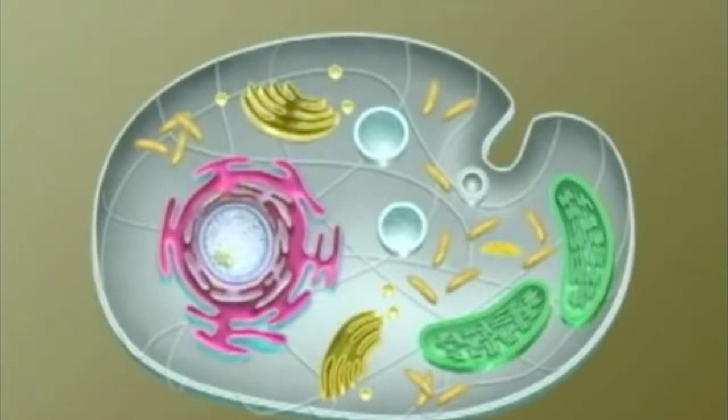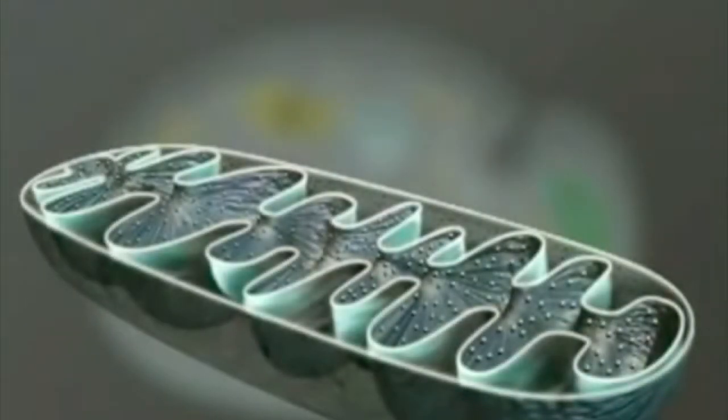Mitochondria, the most prominent roles of mitochondria are to produce the energy currency of the cell, ATP, that is, phosphorylation of ADP, through respiration, and to regulate cellular metabolism. The central set of reactions involved in ATP production are collectively known as the citric acid cycle, or the Krebs cycle.